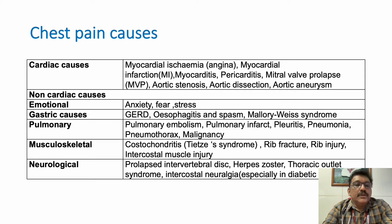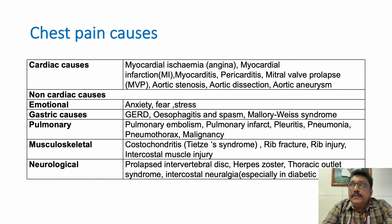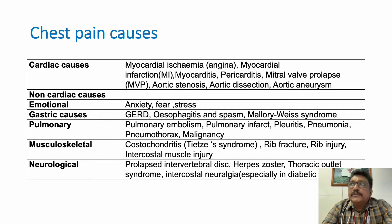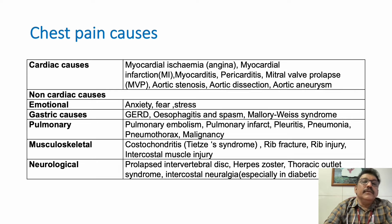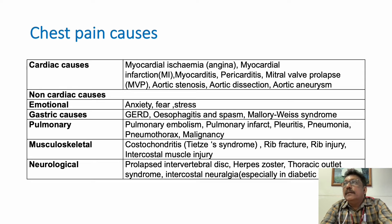Neurological causes include post-herpetic neuralgia — many patients after herpes zoster can have recurrent pain on the same area. Intervertebral disc prolapse in the thoracic segments can cause radiating pain on the chest. Thoracic outlet syndrome and intercostal neuralgia, especially in diabetic patients, can also cause chest pain.